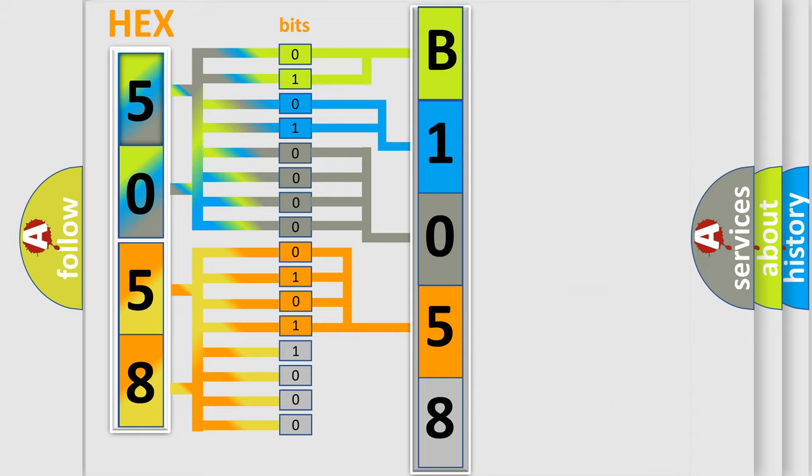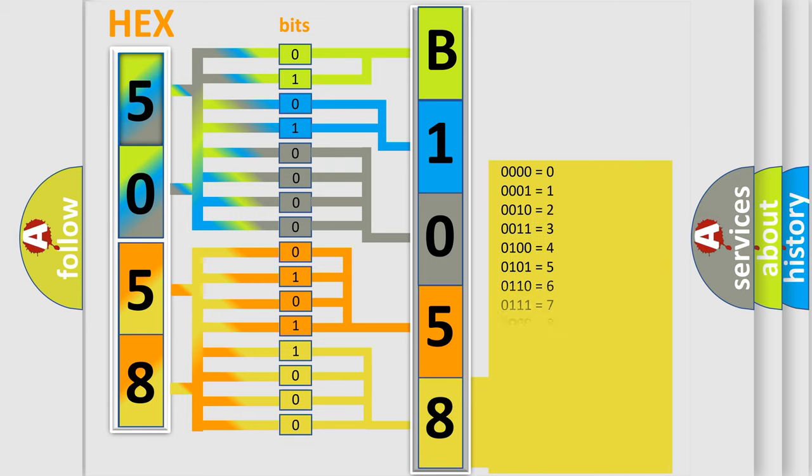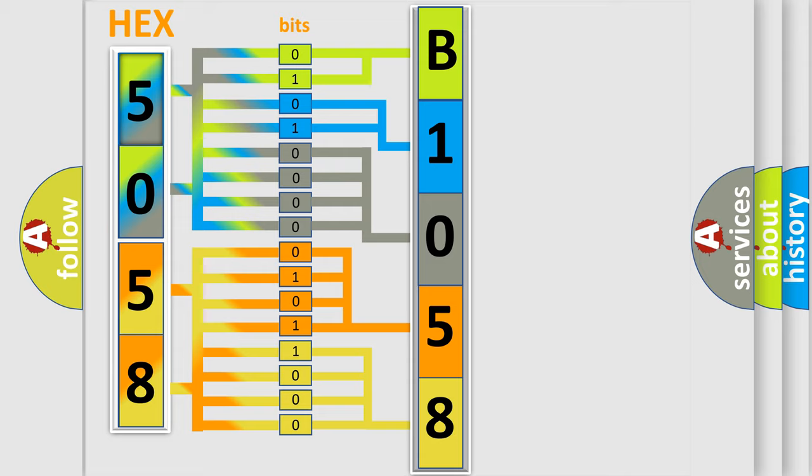A single byte conceals 256 possible combinations. We now know in what way the diagnostic tool translates the received information into a more comprehensible format.